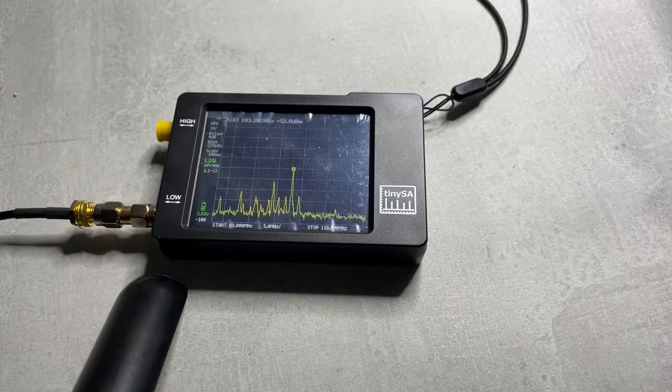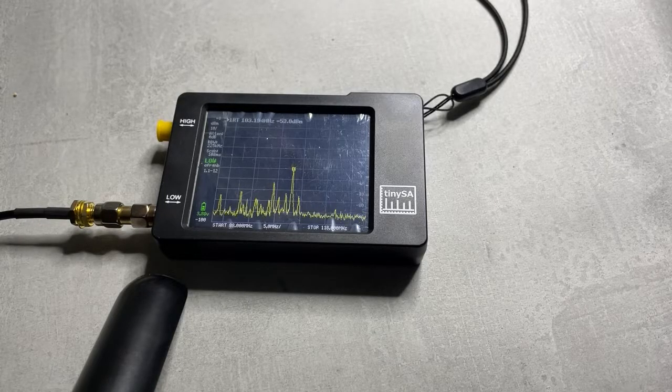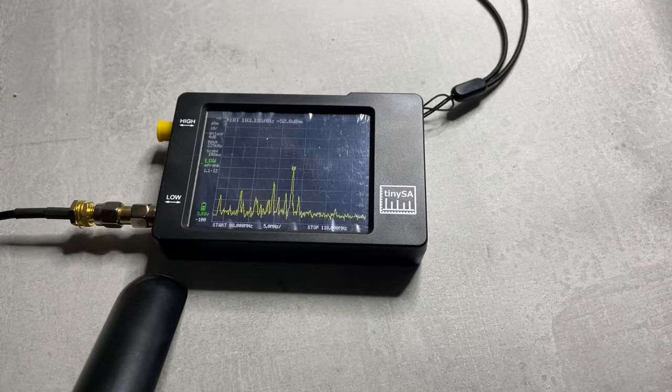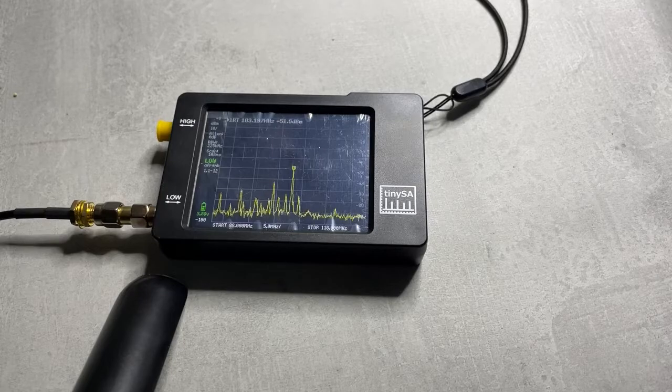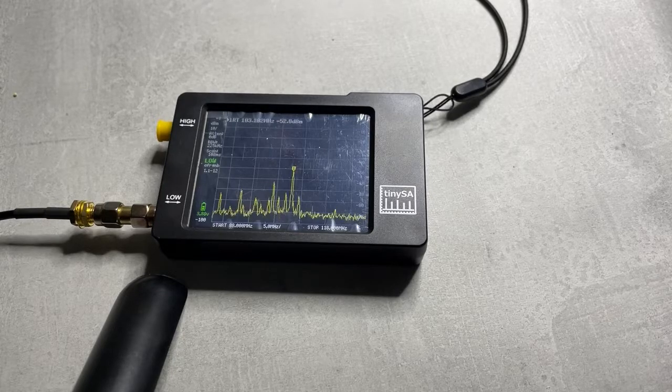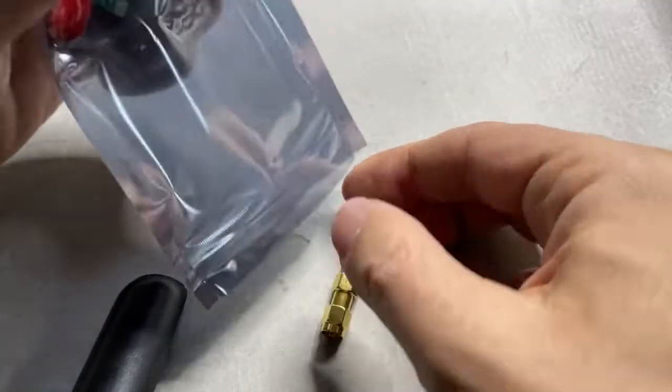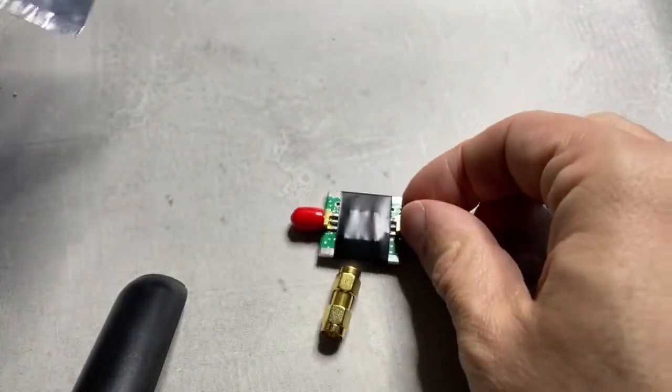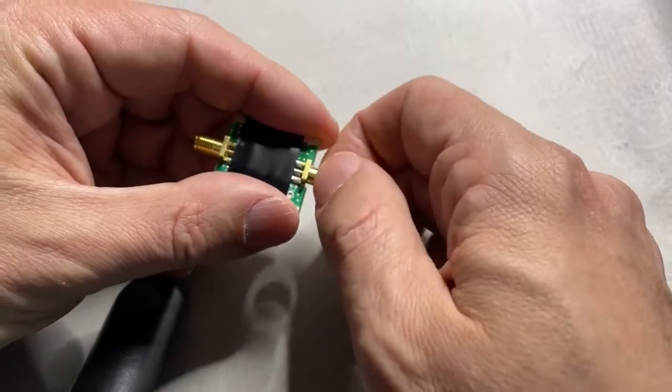The signal with the marker on top here on the spectrum analyzer is our local FM broadcasting station. It's about three and a half kilometers away and I'm in my basement. When I'm out in the woods playing with SDRs, I get interference from that transmitter because I'm a lot closer to it.